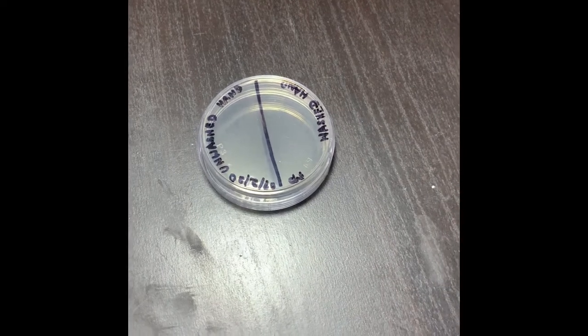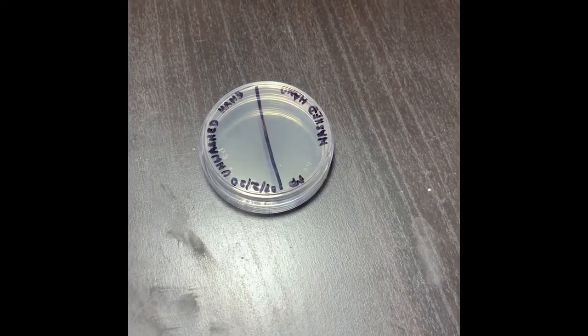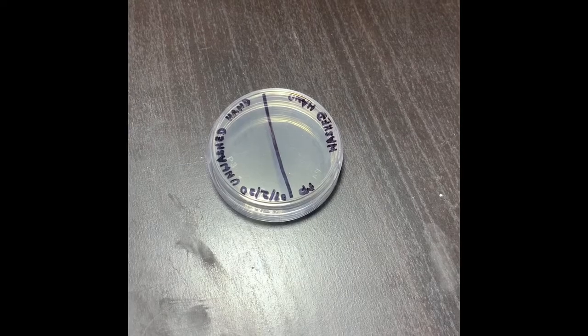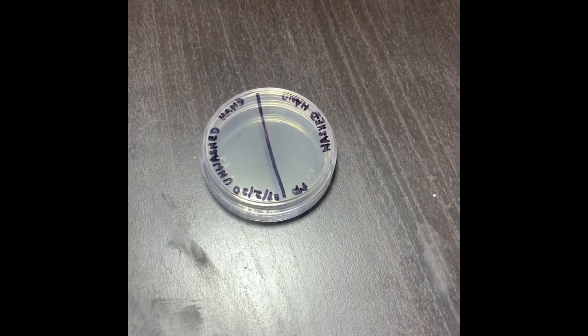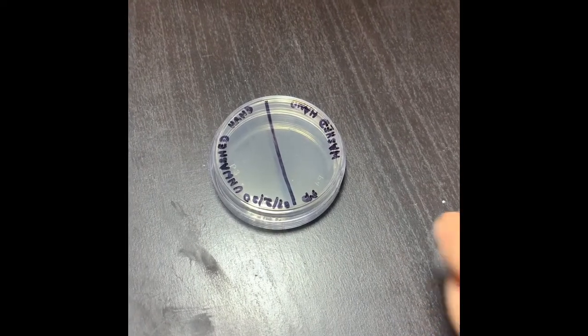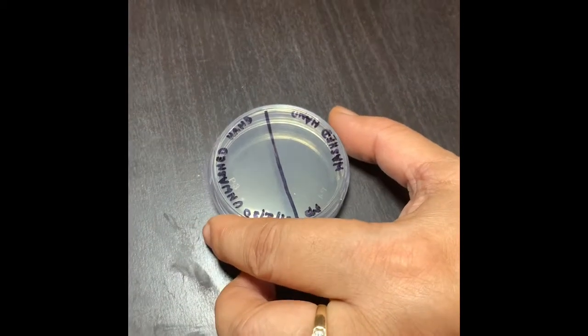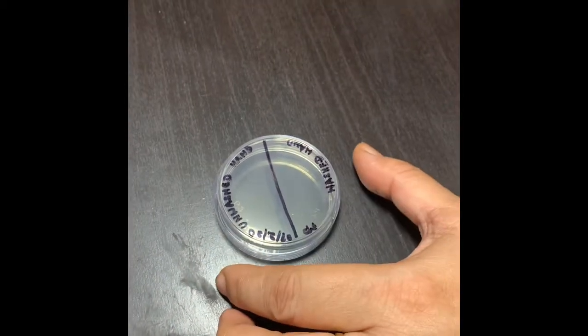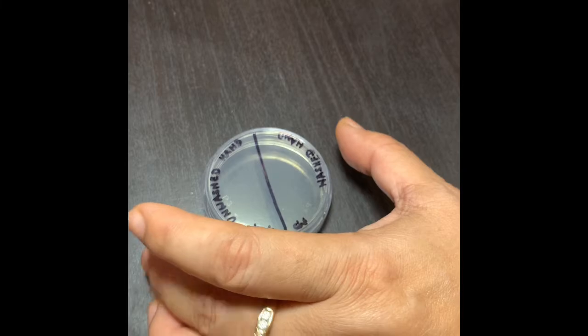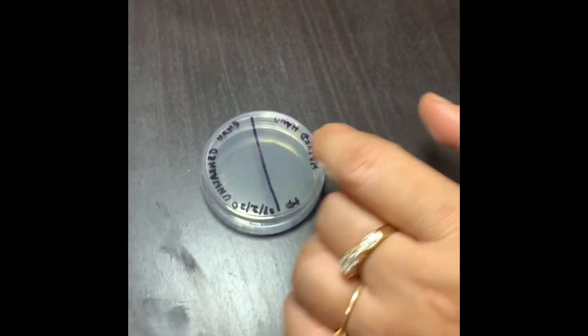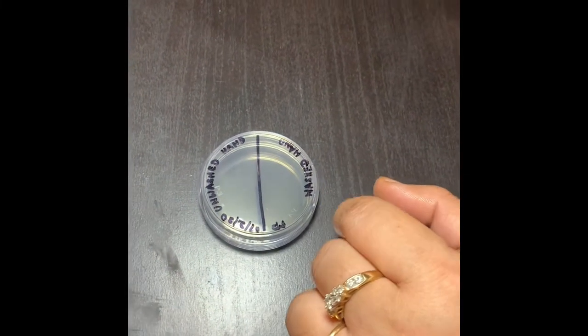I'm going to give you the demo of Lab 8, which is hand washing and normal flora. I have taken this agar plate and divided it into two equal halves. In one half I marked unwashed hand and the other half I marked washed hand.